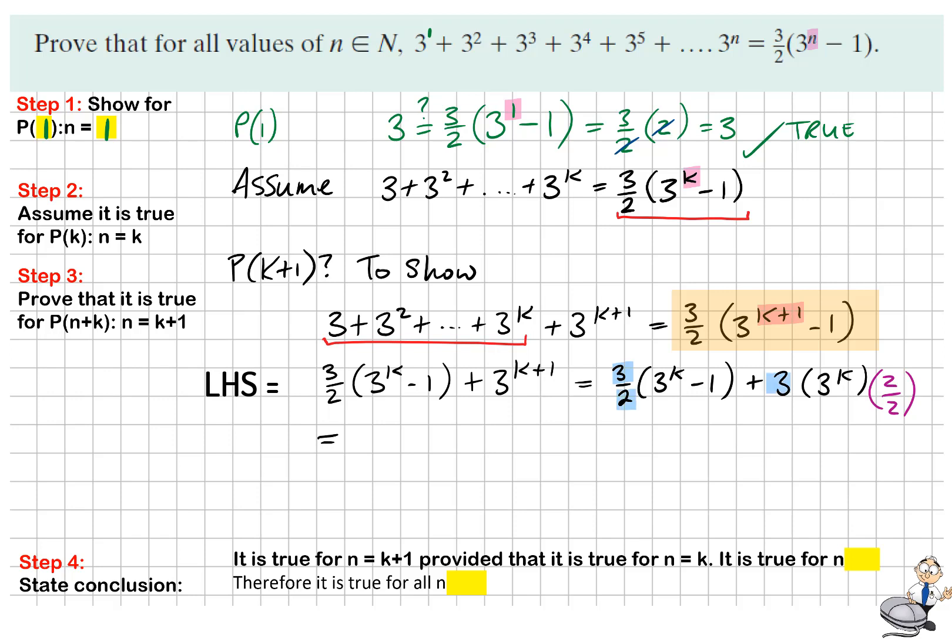So both terms now have a 3 over 2 part to them. So I can take 3 over 2 out as a highest common factor. I want to do that because it's in the expression I want it to look like. So taking out that highest common factor, it's been multiplied in the first term by 3^k - 1, and then there's plus 2 lots of 3^k in the second part of the expression.